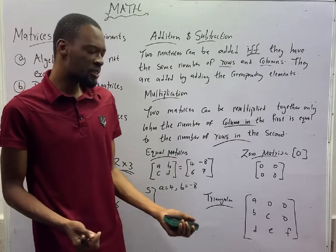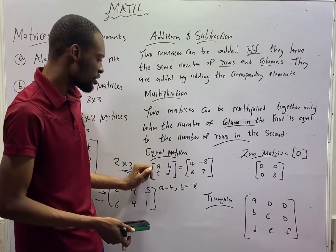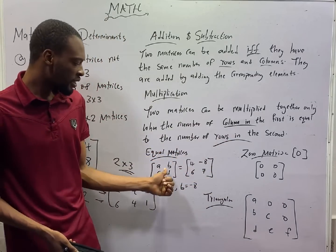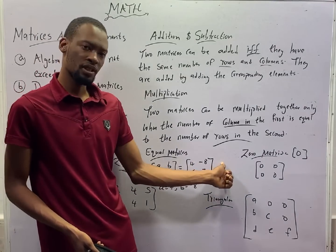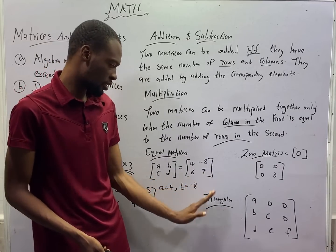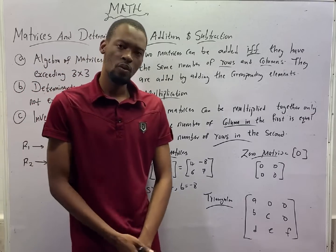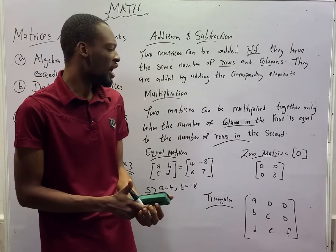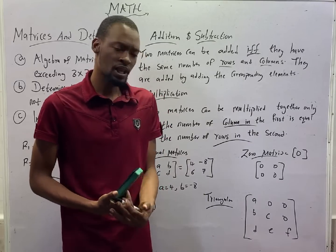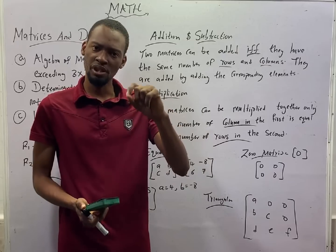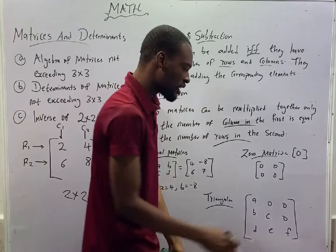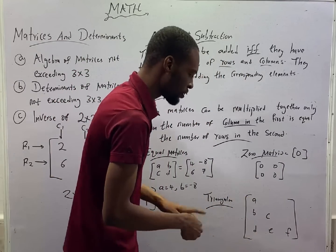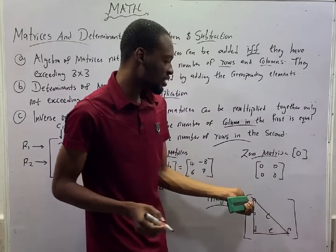Equal matrices are matrices that have corresponding elements that are the same. If matrix [A, B; C, D] equals matrix [4, -8; 6, 7], then A equals 4, B equals -8, C equals 6, and D equals 7. A zero matrix is one where all elements are zero. A matrix is said to be triangular if all the non-zero elements form a triangle shape — if you remove the zeros from such a matrix, the remaining elements form a triangular pattern.